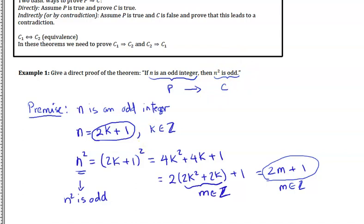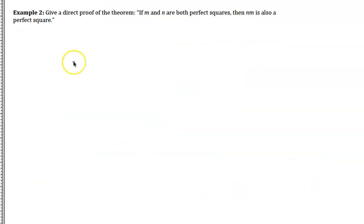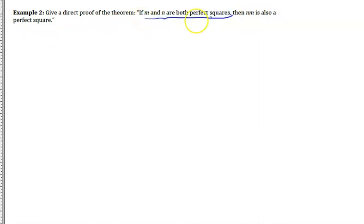Let's look at another problem. Give a direct proof of the theorem: if M and N are both perfect squares, then the product NM is also a perfect square. Again, this is an implication — 'M and N are both perfect squares' are the premises, and 'NM is a perfect square' is the conclusion. We're trying to show if P then C.